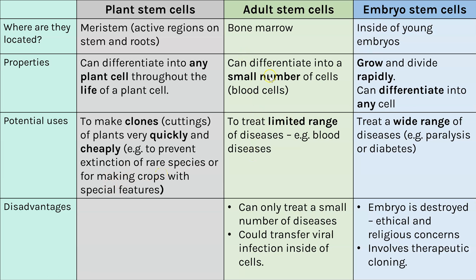Adult stem cells can only differentiate into a small number of cells — for example, blood cells. This can still be useful because it can be used to treat a range of blood diseases. But because these stem cells can only differentiate into blood cells, it is a small number of diseases they can treat. Also, the mechanism behind how you do this can involve viruses, so that means you could transfer a viral infection as well.